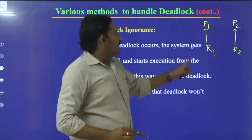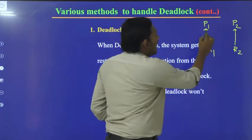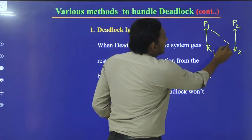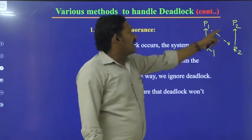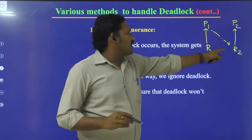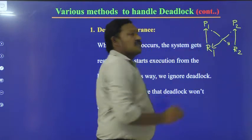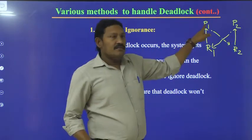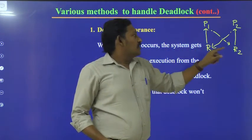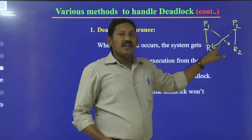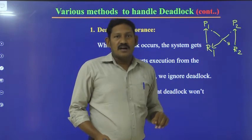After completion of accessing resource R1, P1 is still holding R1 and waiting for resource R2. Similarly, P2 has finished accessing R2 and is waiting for resource R1. P1 will release R1 only when it gets R2, and P2 will release R2 only when it gets R1. Here a deadlock has occurred.